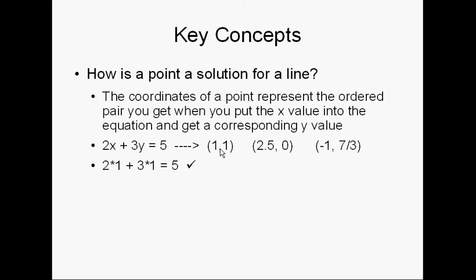Okay, if I take the first one, the coordinate pair, the ordered pair rather, 1, 1. I put in 1 for my X, 1 for my Y, and work it out. 2 times 1 is 2, plus 3 times 1, which is 3. 2 plus 3 equals 5. Check.